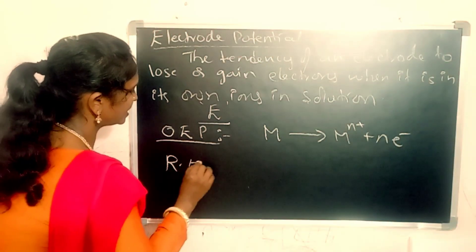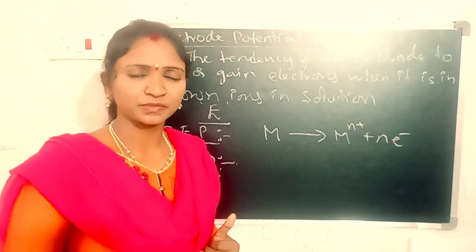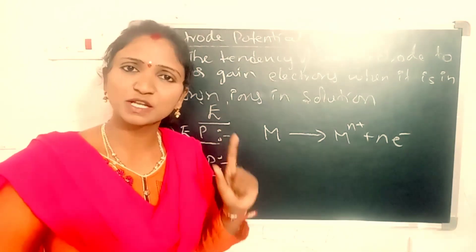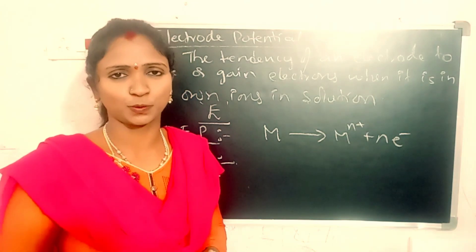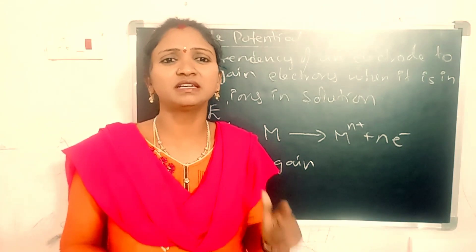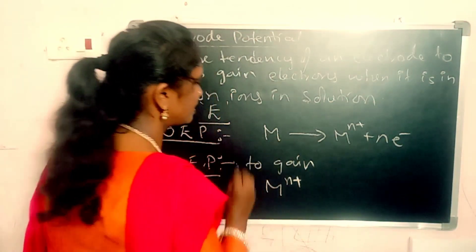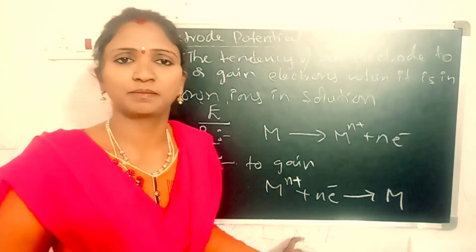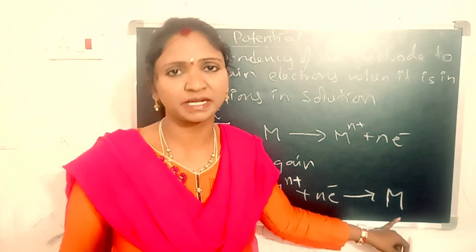What is meant by reduction electrode potential? Reduction electrode potential is the tendency of an electrode to gain electrons when it is present in its own ions in solution. The metal ion M n-plus gains n number of electrons and becomes pure metal.